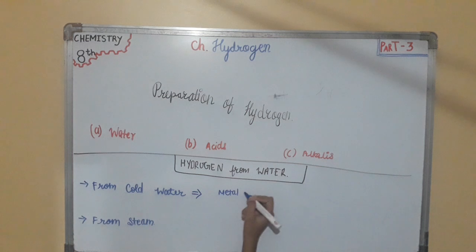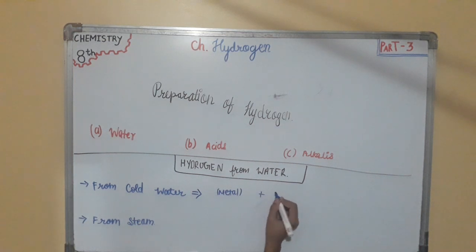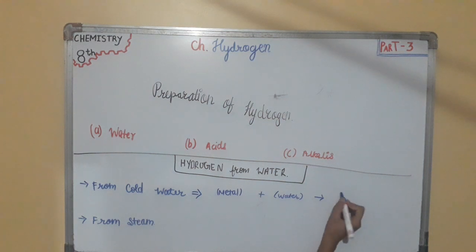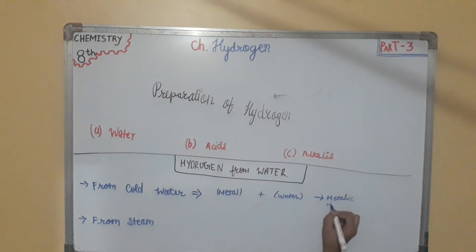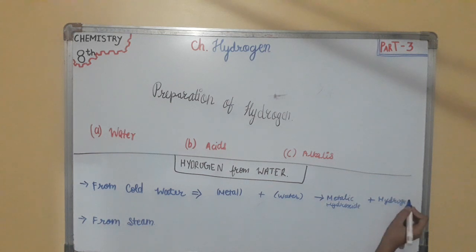The general reaction is: Metal — such as sodium, potassium, or calcium — plus water (cold water) gives metallic hydroxide plus hydrogen.